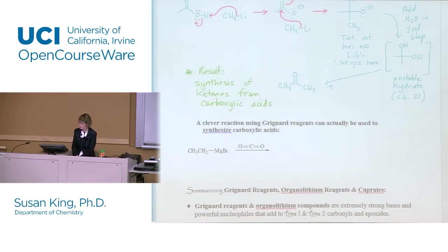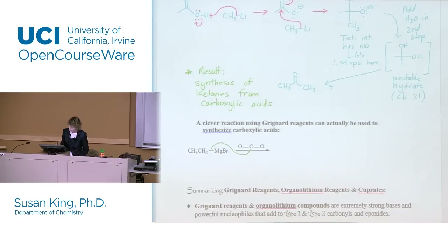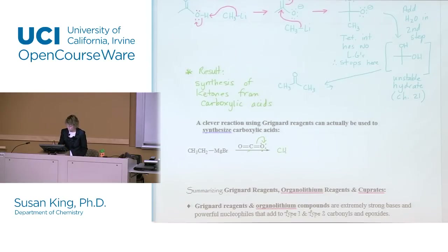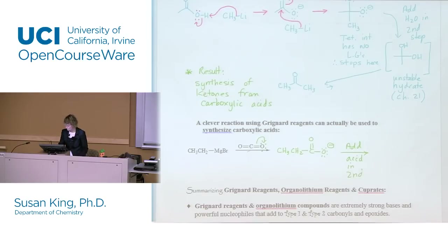A clever reaction using Grignards can actually be used to synthesize carboxylic acids. The arrow comes from the carbon-magnesium bond; we attack the carbon dioxide and push electrons up onto oxygen. There's your carboxylate, and then when you add acid in the second step, you protonate that — and that's a way to make a carboxylic acid from a Grignard.